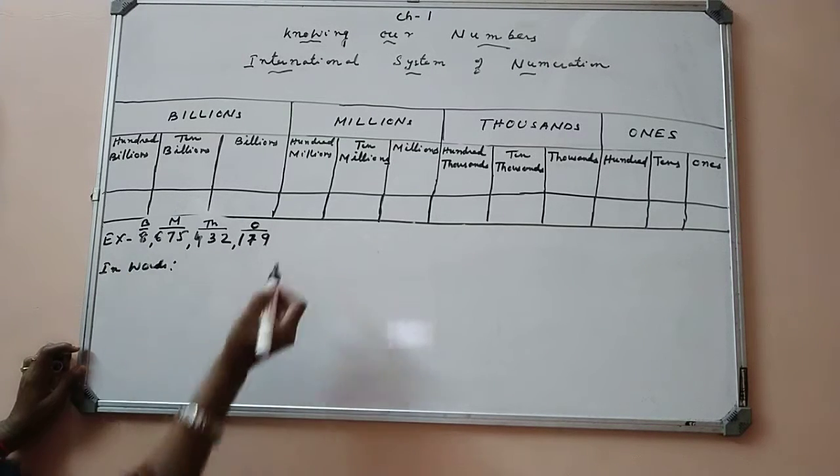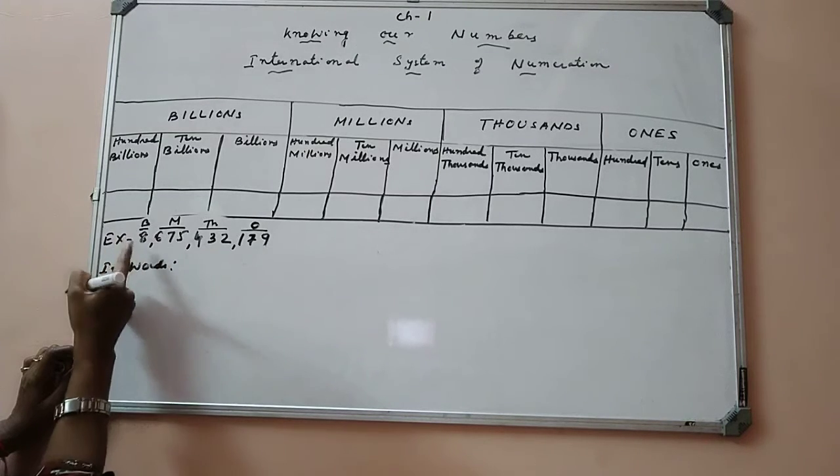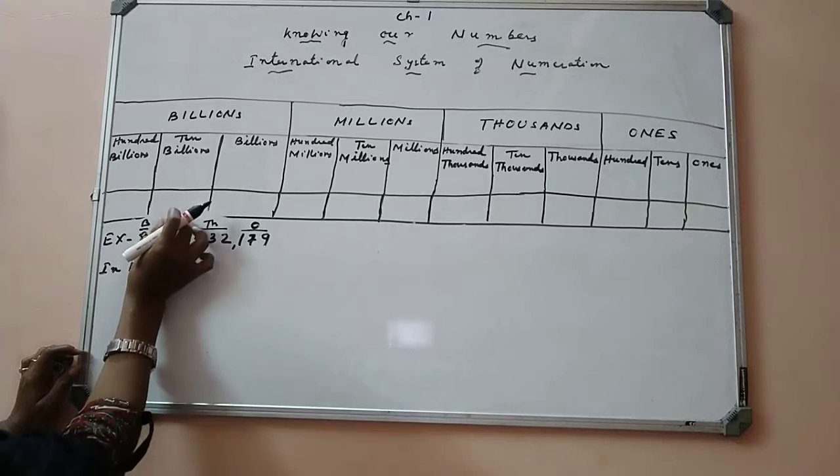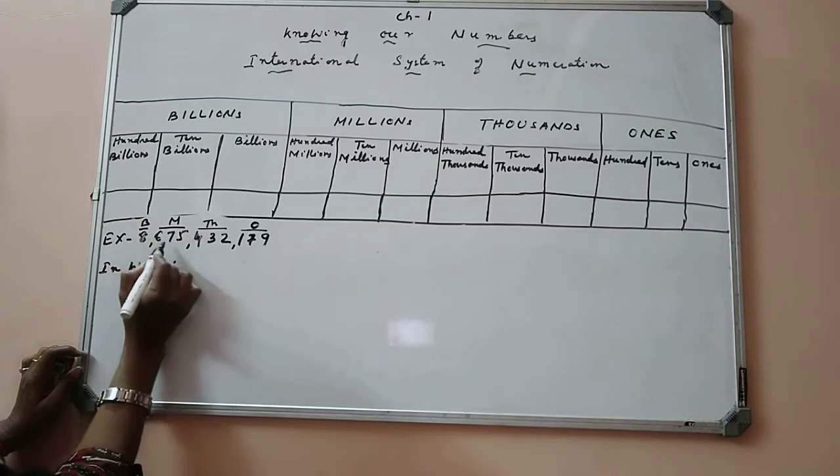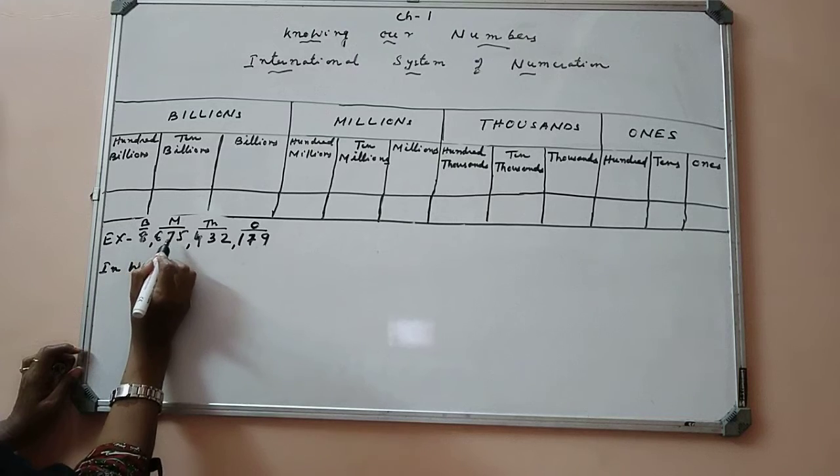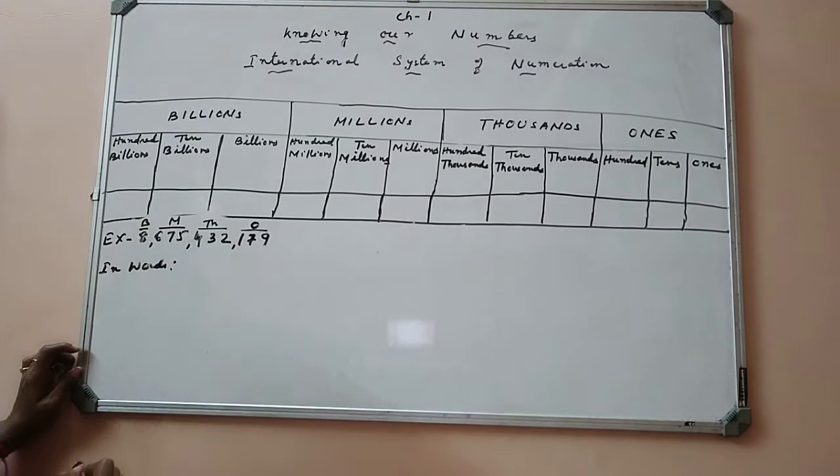Now, how to read this number? We have in billions period, we have only eight. So we will read as eight billion. In million, we have three digits here. So let us first read the number and then period them, like 675 million.